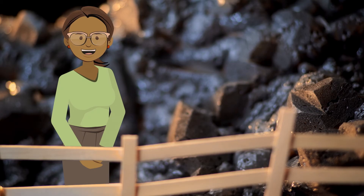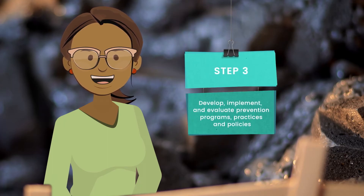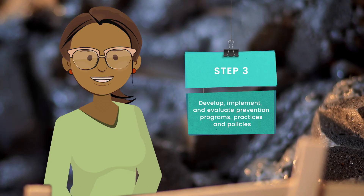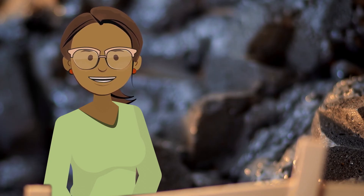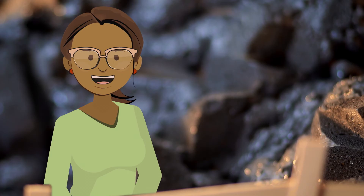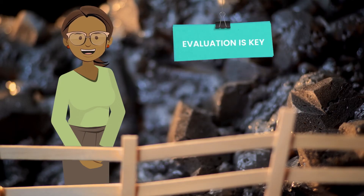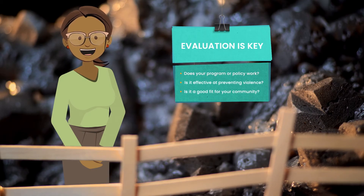It's also important to note that risk and protective factors can apply to both victims and perpetrators. Step 3 involves developing, implementing, and evaluating prevention programs, practices, and policies. Before developing a new program or policy, you should determine if effective programs or policies have already been identified. Some areas of violence research are further along than others — for example, the fields of youth violence and child abuse and neglect prevention have benefited from decades of research. A thorough and rigorous evaluation is the only way to know for sure if your program or policy really works. You may be trying to determine if your policy or program is effective in preventing violence, or whether certain programs or policies will work better than others in your community.